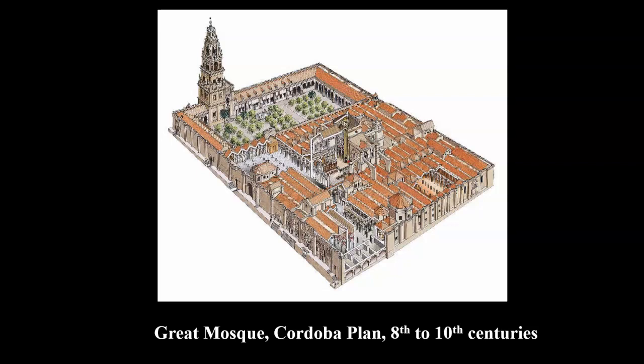Hi everyone, I'm back and I want to take a moment to talk about Islamic mosque architecture. I'm showing you an image of the Great Mosque at Córdoba — the plan. As we've been reading, the development of mosque architecture is really modeled on its form in the prophet's house in Medina, which was basically configured around a rectangular courtyard.